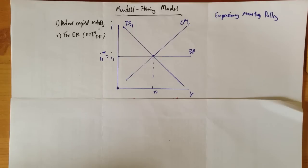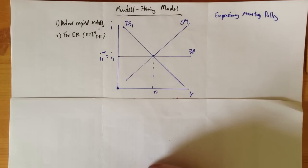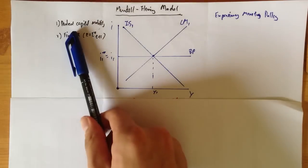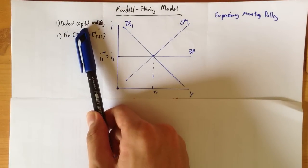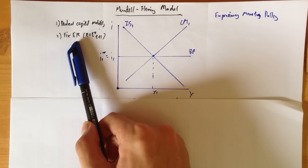What's up guys? Today I'm going to talk about the Mundell-Fleming model. Basically there are two things you must take note when it comes to this model: in the short run it predicts that there is perfect capital mobility, and the economy is having a fixed exchange rate policy.